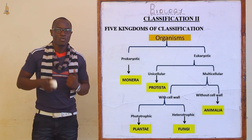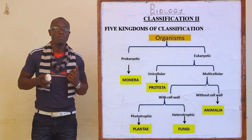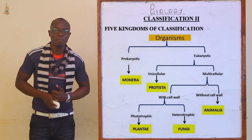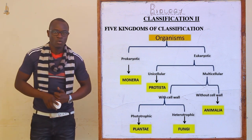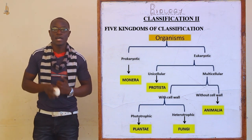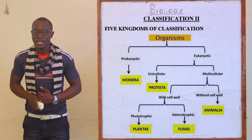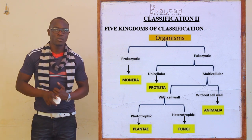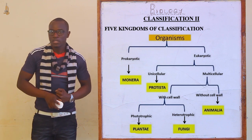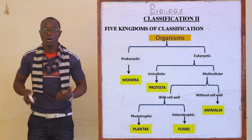Considering the kingdom, we have five kingdoms of classification. The first is Kingdom Monera, comprising only bacteria — also called Kingdom Prokaryota. Next is Kingdom Protoctista, or Kingdom Protista, or Kingdom Eukaryota, which includes protozoa, algae, and amoeba. Then we have Kingdom Fungi or Kingdom Mycophyta, Kingdom Plantae comprising all plants, and Kingdom Animalia comprising all animals.